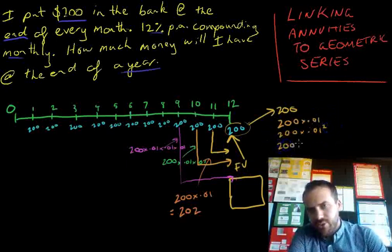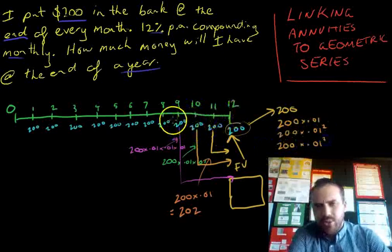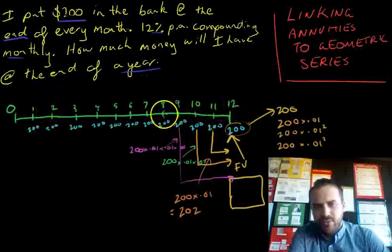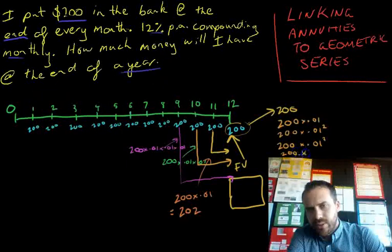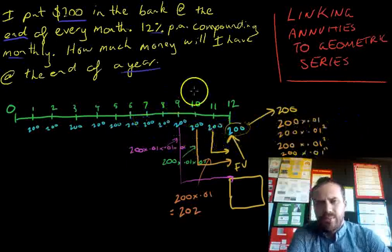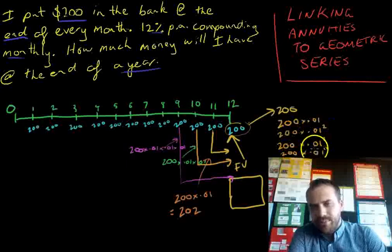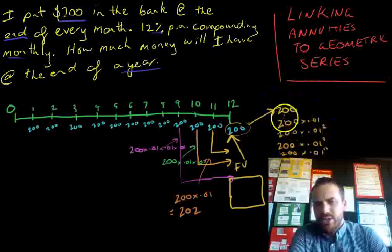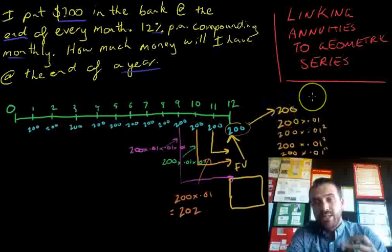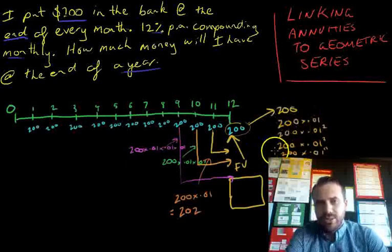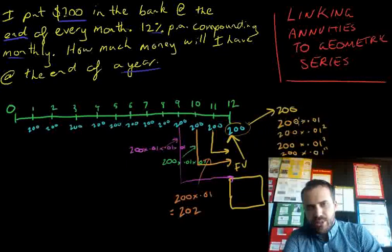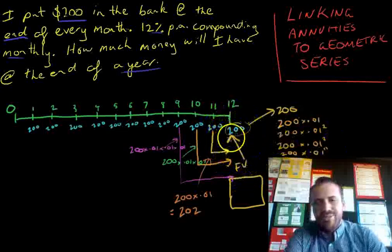The next one is 200 times 1.01 cubed, and if we go all the way back we should end up at 1.01 to the power of 11. If we take all those numbers and add them up we'll have our answer. This should be very familiar — what we've actually created is a geometric series. Each number is being multiplied by a common factor of 1.01, and we're going to add up all of those numbers to know how much money is in our bank account at the end of the year.